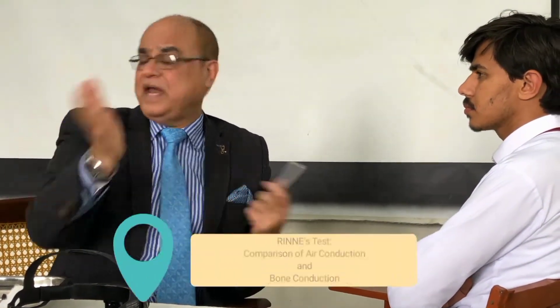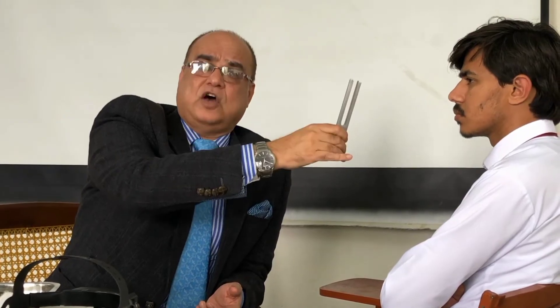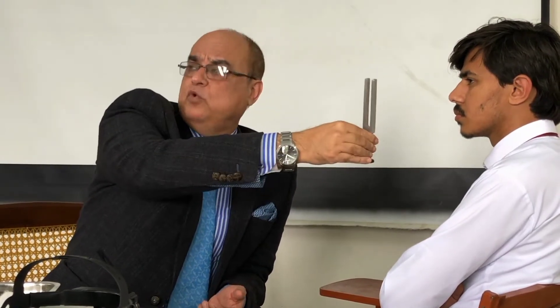Rinne's test is basically a comparison of air conduction and bone conduction. You go for air conduction first and ask the patient to tell you when he stops hearing, then you go for bone conduction. To save time, the improvisation is simple: you strike the tuning fork and place it for air conduction first, ask the patient if he can hear, and if yes, move to bone conduction.